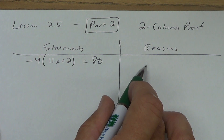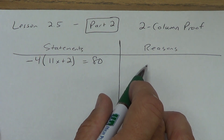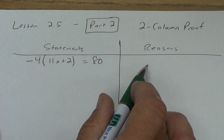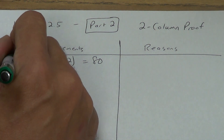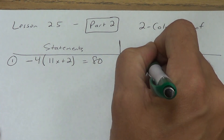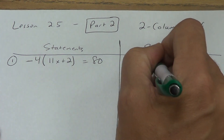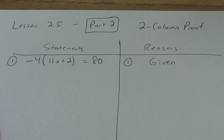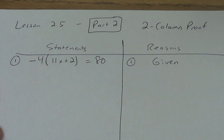This column over here is called statements. This one is called your reasons. For every statement you give, you must have a valid reason. Reasons can be properties, postulates, and later on, theorems. Also givens — given means they gave you that information. Usually givens go at the beginning, not always, but usually.